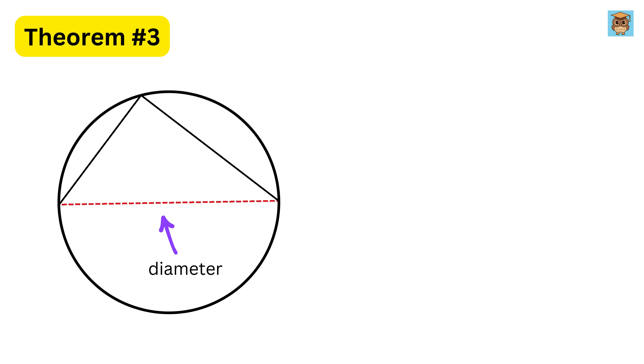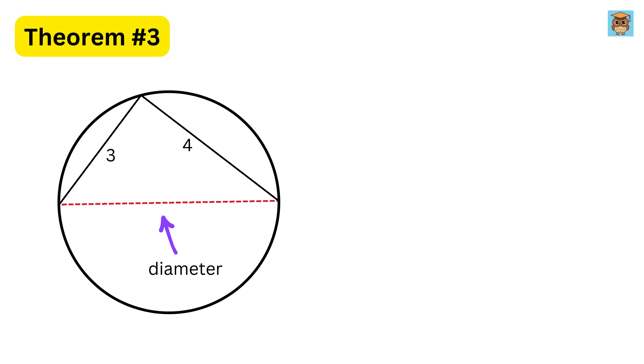Tell me: if this is the diameter of the circle, this side length is 3 and this is 4, then what will be the value of the diameter? Now, theorem four.